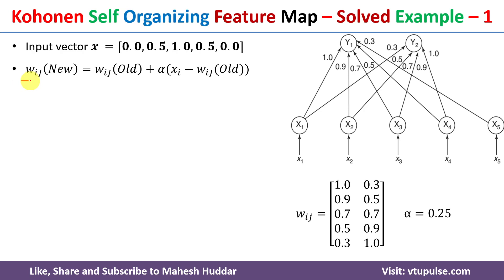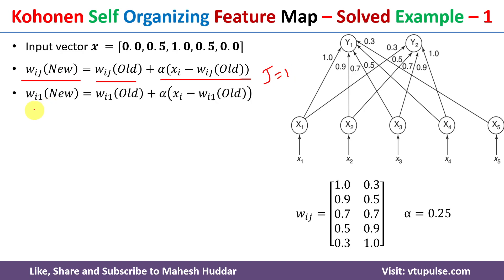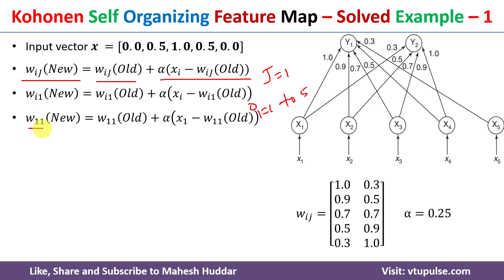To update the weights, we use the equation: W_ij(new) = W_ij(old) + alpha × (X_i − W_ij(old)). Since j=1, this becomes W_i1(new) = W_i1(old) + alpha × (X_i − W_i1(old)). We need to update W_11, W_21, W_31, W_41, and W_51, with i going from 1 to 5. For i=1: W_11(new) = W_11(old) + alpha × (X1 − W_11(old)).